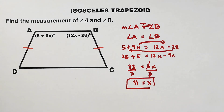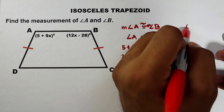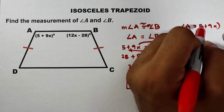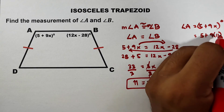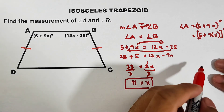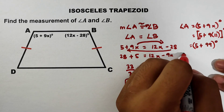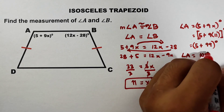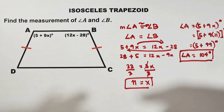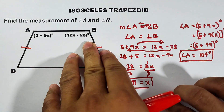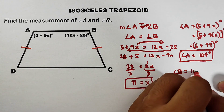This is now the value of x. Let us solve for the value of angle A. Your angle A is 5 plus 9x degrees. Replace x by 11: this is 5 plus 9 times 11 degrees. Simplify — 9 times 11 is 99, so angle A equals 5 plus 99, which is 104 degrees. Since angle A and angle B are congruent as base angles, if angle A is 104 degrees, then angle B is also equal to 104 degrees.